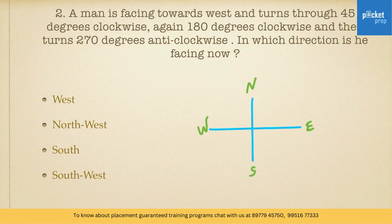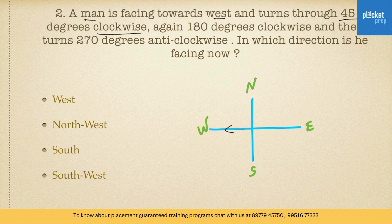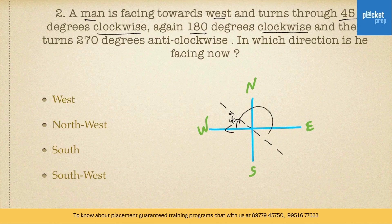Let us draw the basic direction map. The first statement states that the man is facing towards west. He is in this direction and he turns 45 degrees clockwise. The man has turned 45 degrees clockwise from west. After that he has turned 180 degrees clockwise again. 180 degrees starting from here will be like this — because 45 here, 90 here, and 45 here again, totaling 180 degrees.